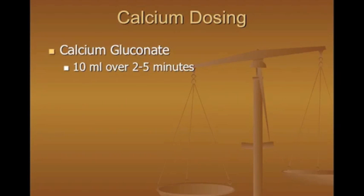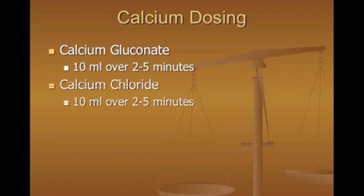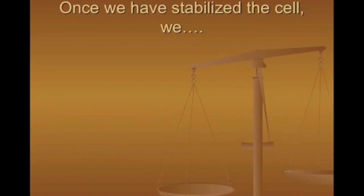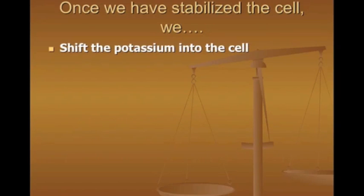For dosing: calcium gluconate 10 mL over two to five minutes; calcium chloride 10 mL over two to five minutes. If your patient has digoxin toxicity — you suspect dig tox with hyper-K and you see that scooped ST segment — give your calcium infusion over a longer period, about 20 minutes, and consider giving magnesium as well.